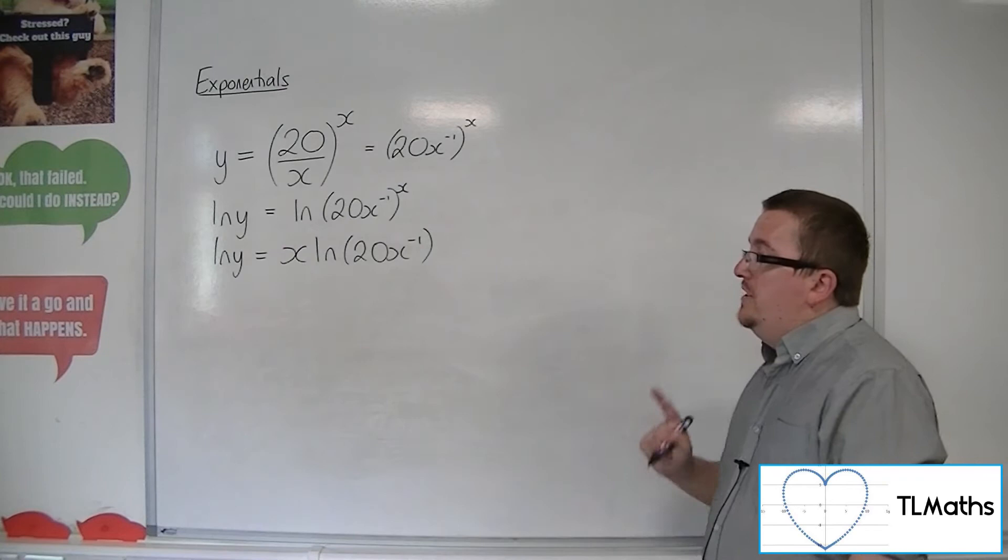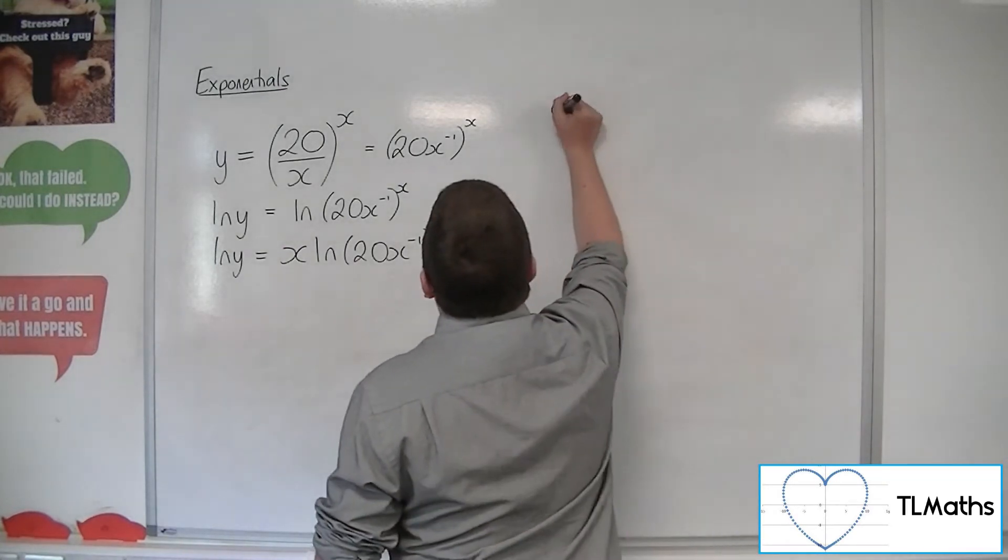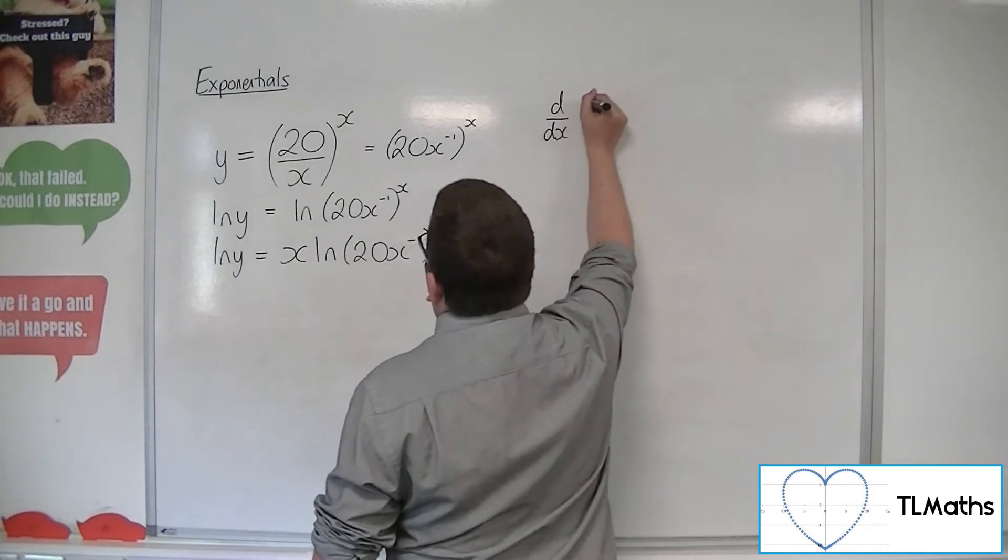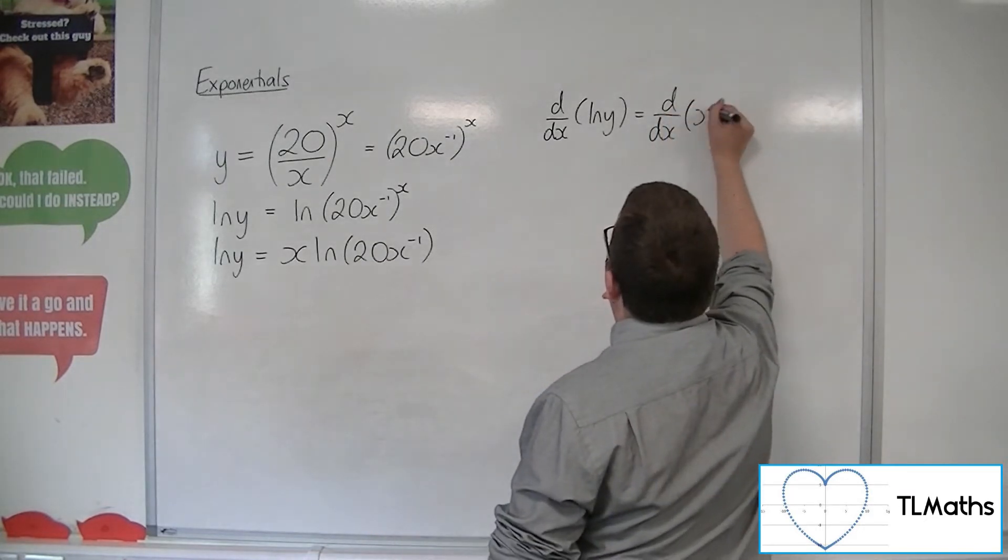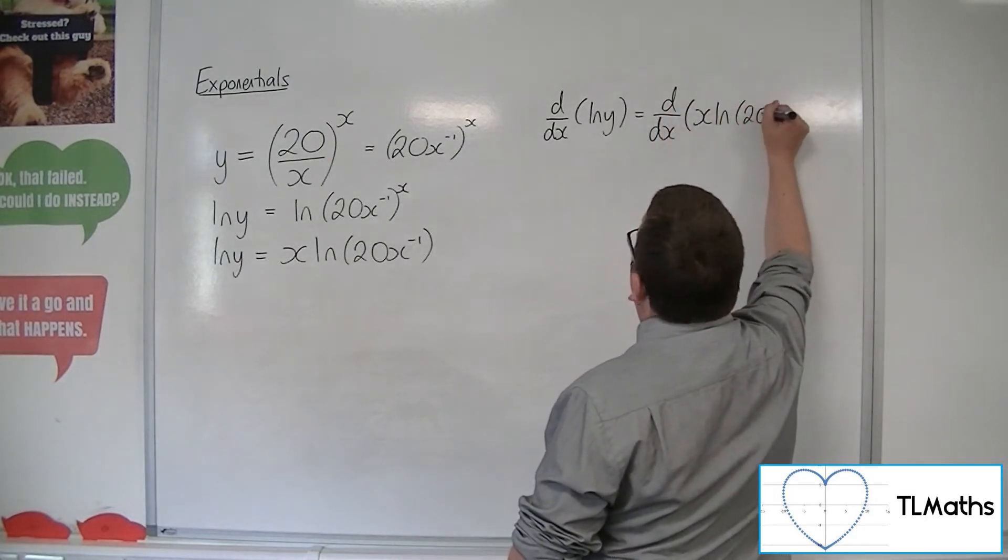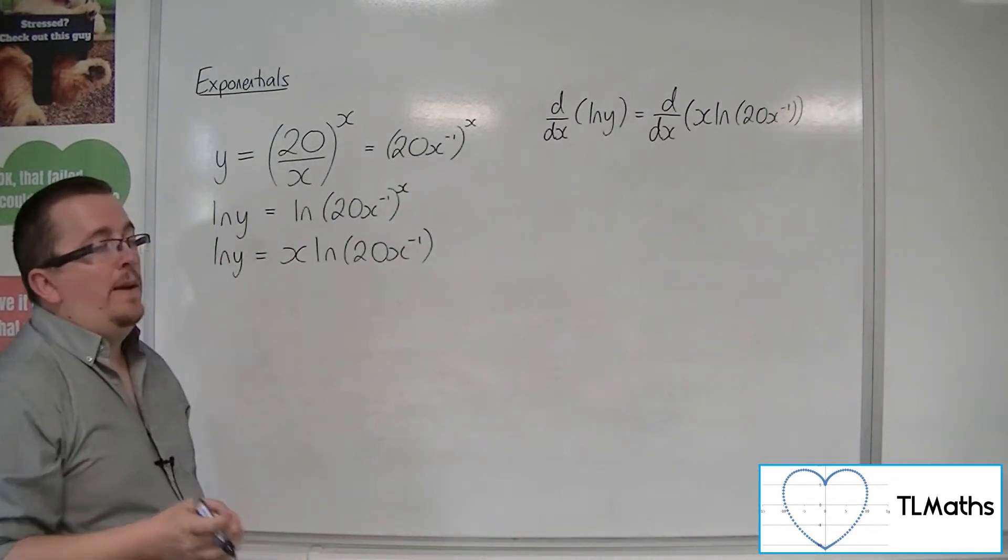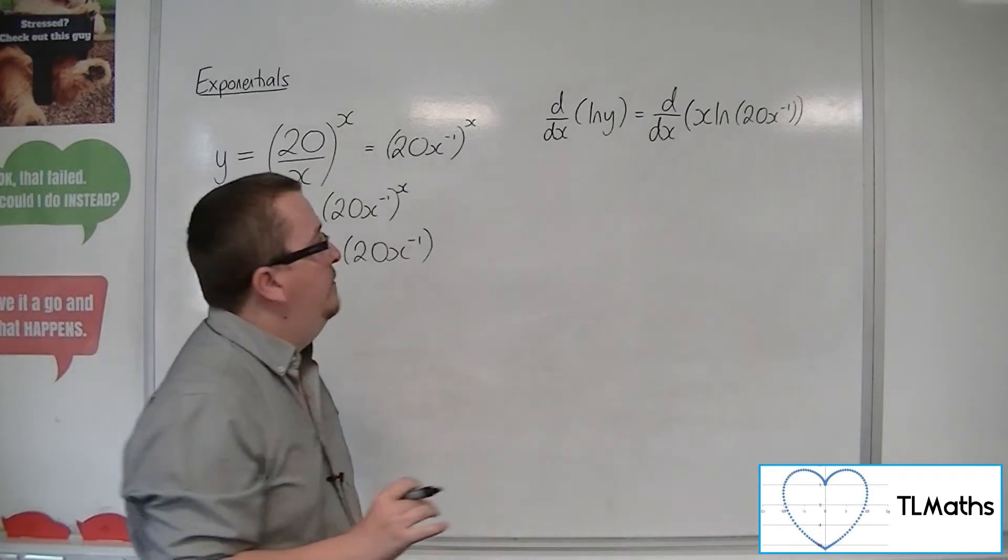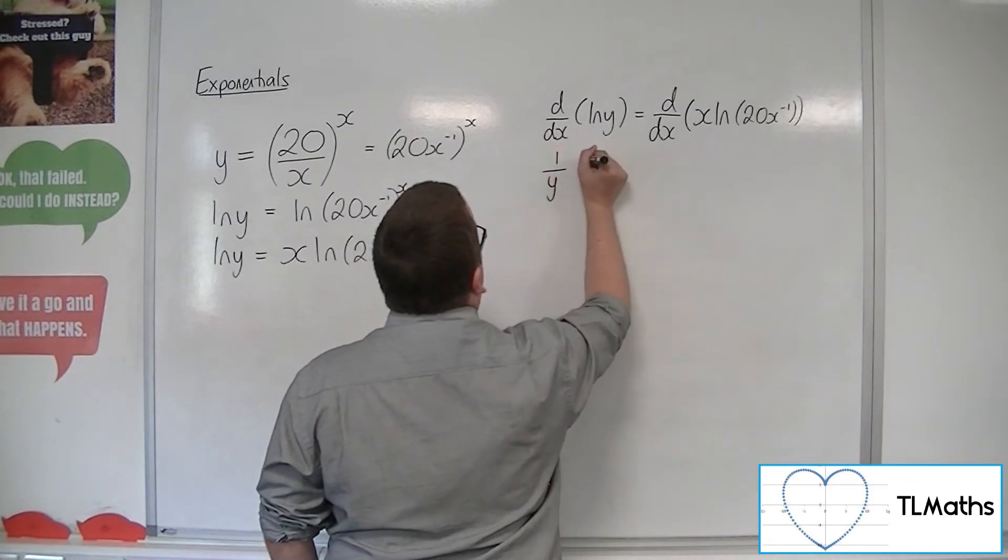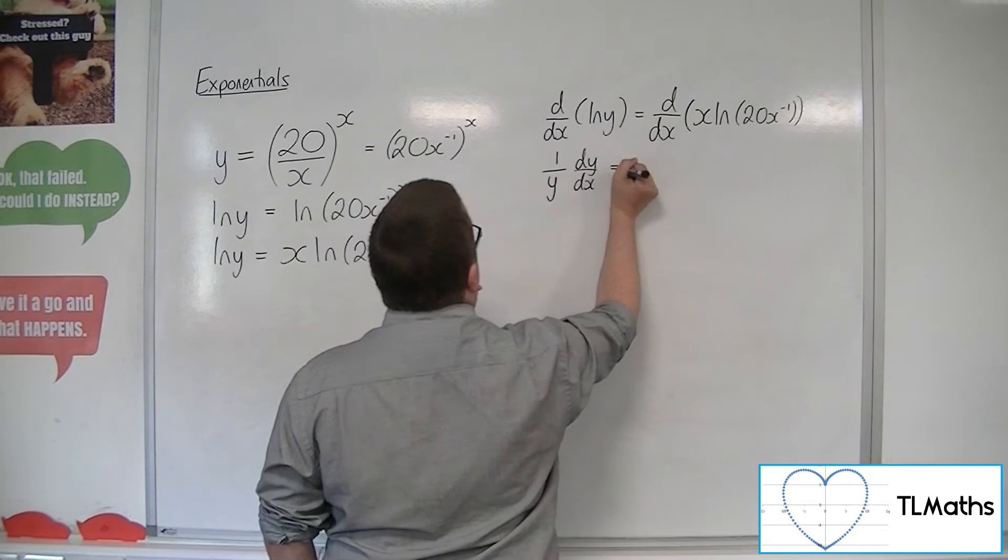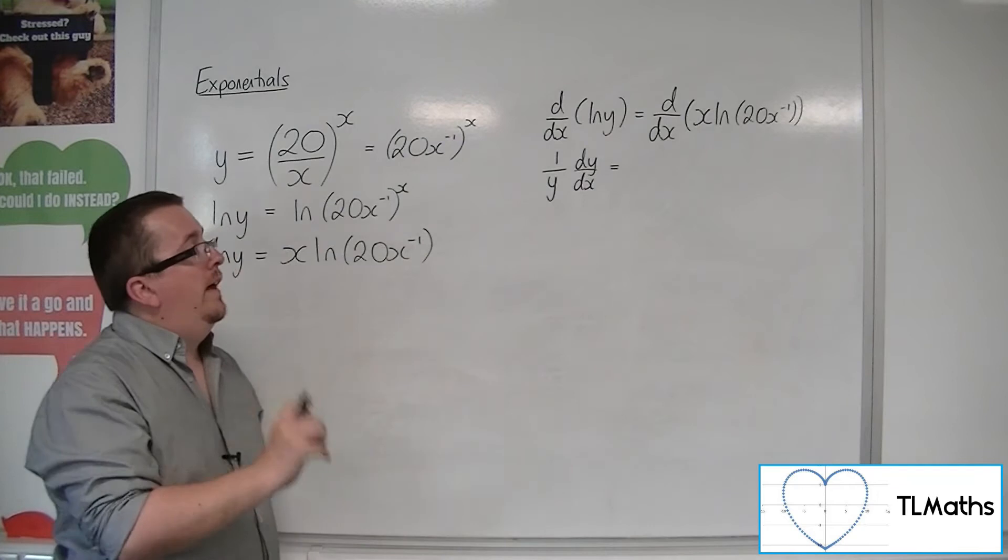Now we are ready to differentiate both sides with respect to x. So I'm going to differentiate the left-hand side and the right-hand side. Now the left-hand side, to differentiate that with respect to x, we're using implicit differentiation. So the derivative of ln y will be 1 over y dy by dx. If you haven't gone across implicit differentiation yet, you'd need to go and look at that first.